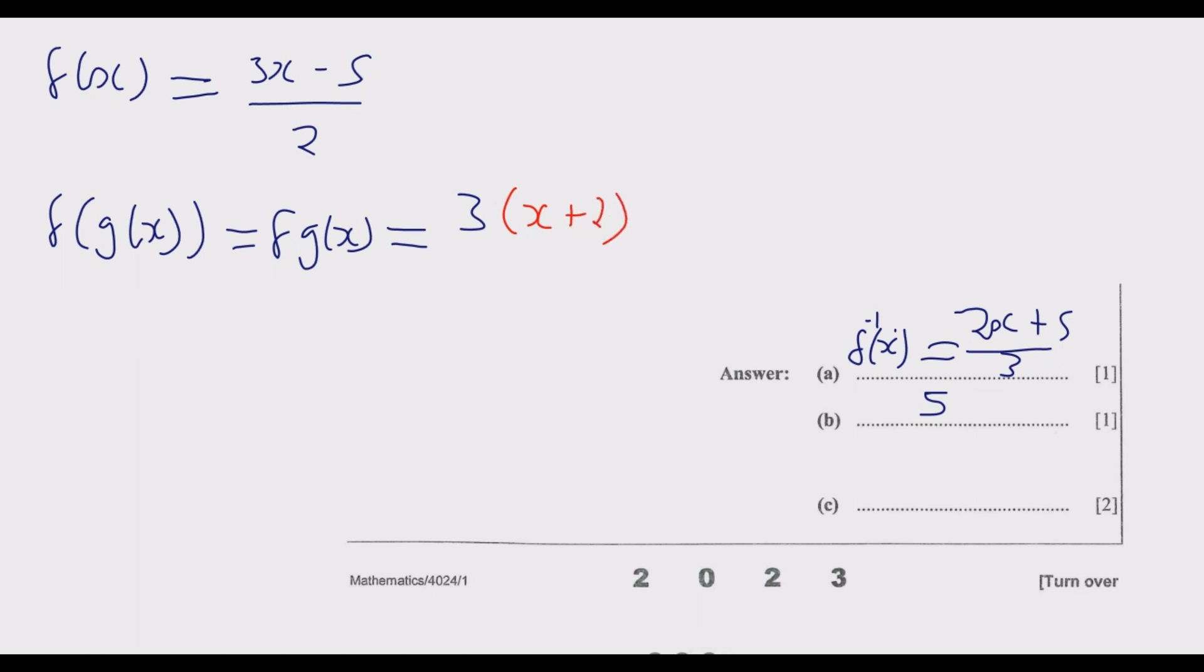So here I'm going to put in x + 2, then whatever remains, remains the same. Then we divide by 2. Then the next thing is just simplifying. So it will be 3 times x, which is 3x. After I multiply this, I'm going to multiply with this: 3 times 2, so it will be plus 6, then minus 5 over 2. So I'm going to have now 3x plus 1 over 2.